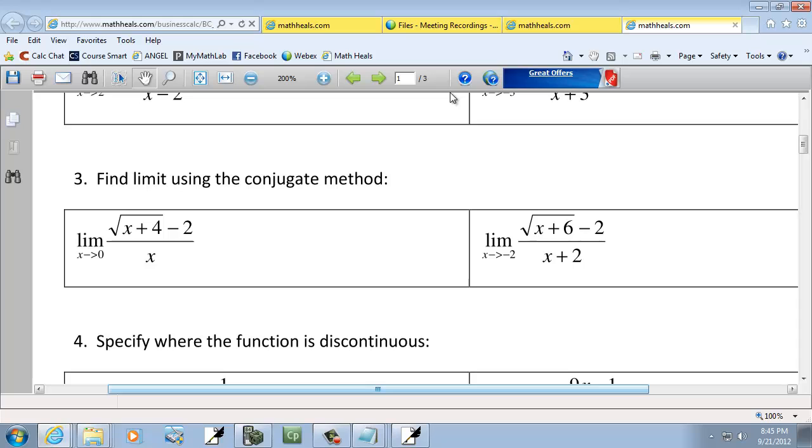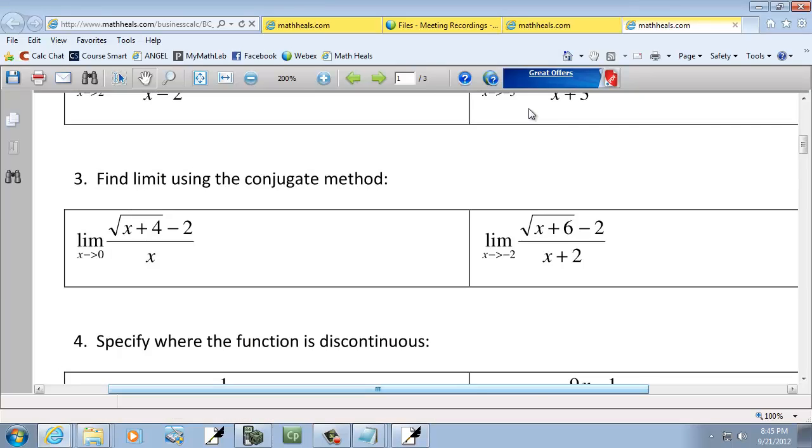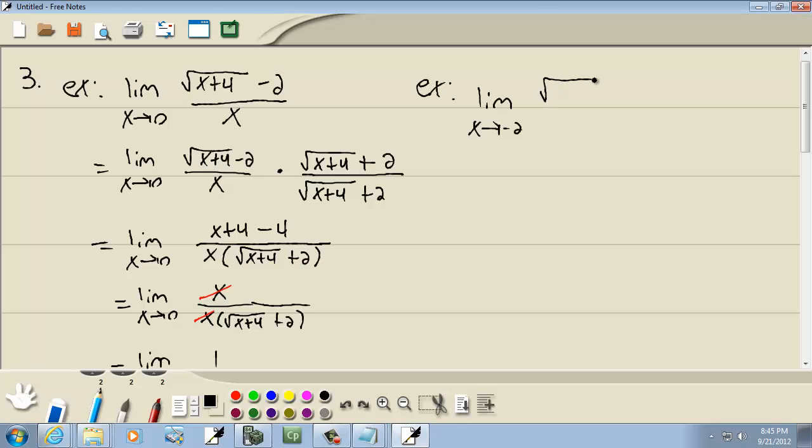Let's look at our second example. We've got limit as x goes to negative 2 of square root of x plus 6 minus 2 over x plus 2. Now again, if we plugged in negative 2, we'd have a negative 2 plus 2 in the denominator, which would give us 0. We can't have a 0 downstairs. So we're going to multiply the top and bottom by the conjugate of the bottom.